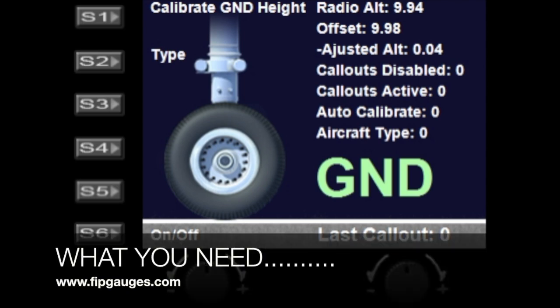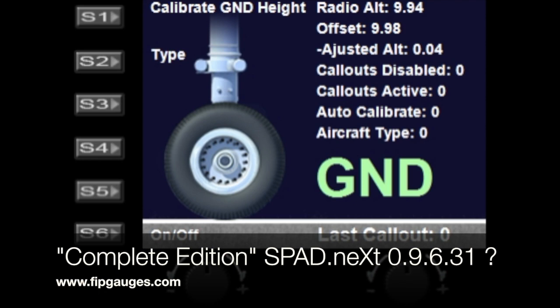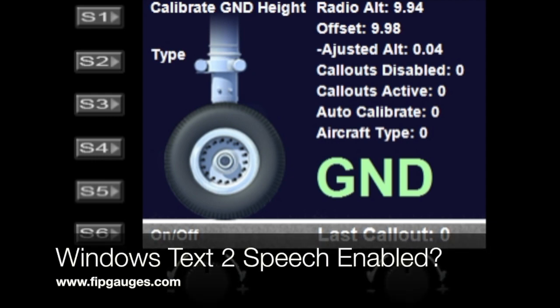The prerequisites for running this gauge are you must have the complete edition version of spad.next 0.9.6.31 or better, which is the current beta, and you must also have Windows Text to Speech enabled as well.